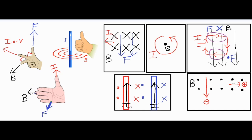For our last example, we have a positive charge moving to the right, which we consider the velocity or current. I take my thumb and point it to the right, then twist my arm so my fingertips are pointing out of the screen. In that case, the force is going downwards.